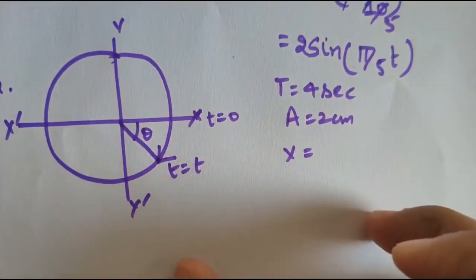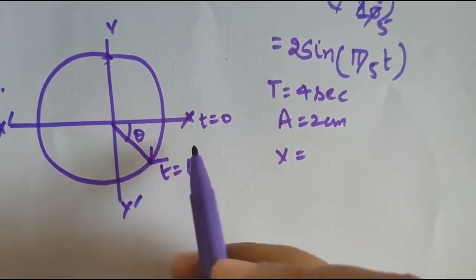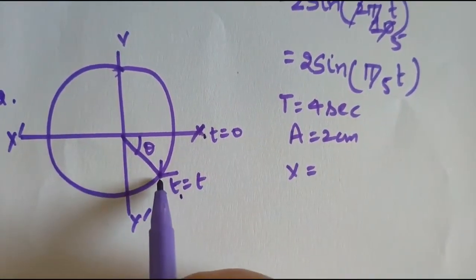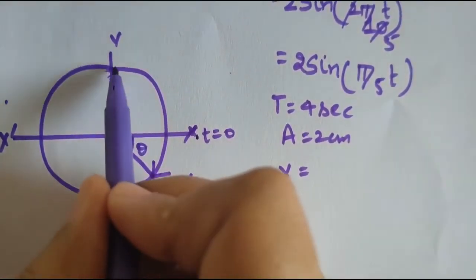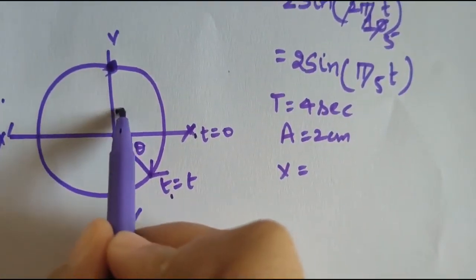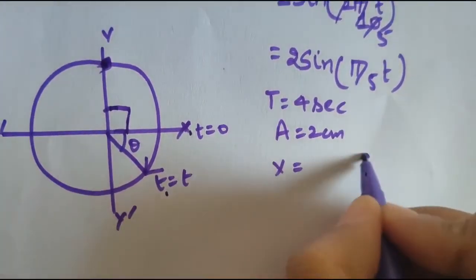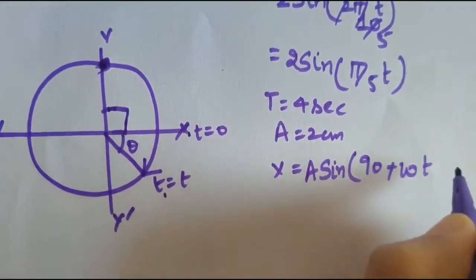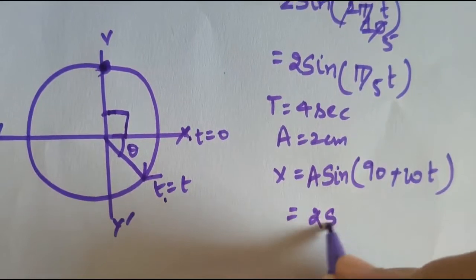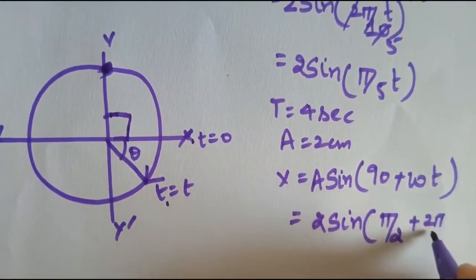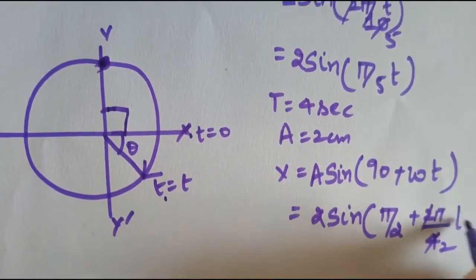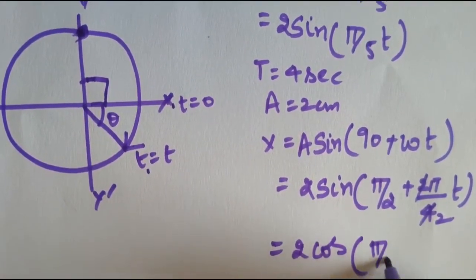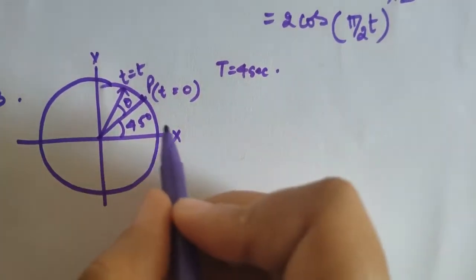Second numerical: the particle starts from the x-axis and has reached a point that is (90° + θ) away from our assumed starting position on the y-axis. So x = a sin(90° + ωt). With a = 2 and time period = 4 seconds, ω = 2π/4 = π/2. Since sin(90° + θ) = cos θ, the final answer is x = 2 cos(π/2 · t).